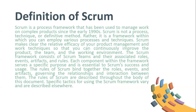Scrum is a process framework that has been used to manage work on complex products since the early 1990s. Scrum is not a process, technique, or definitive method. Rather, it is a framework within which you can employ various processes and techniques. Scrum makes clear the relative efficacy of your product management and work techniques so that you can continuously improve the product, the team, and the working environment. The Scrum framework consists of Scrum teams and the associated roles, events, artifacts, and rules. Each component within the framework serves a specific purpose and is essential to Scrum's success and usage. The rules of Scrum bind together the roles, events, and artifacts, governing the relationships and interaction between them.